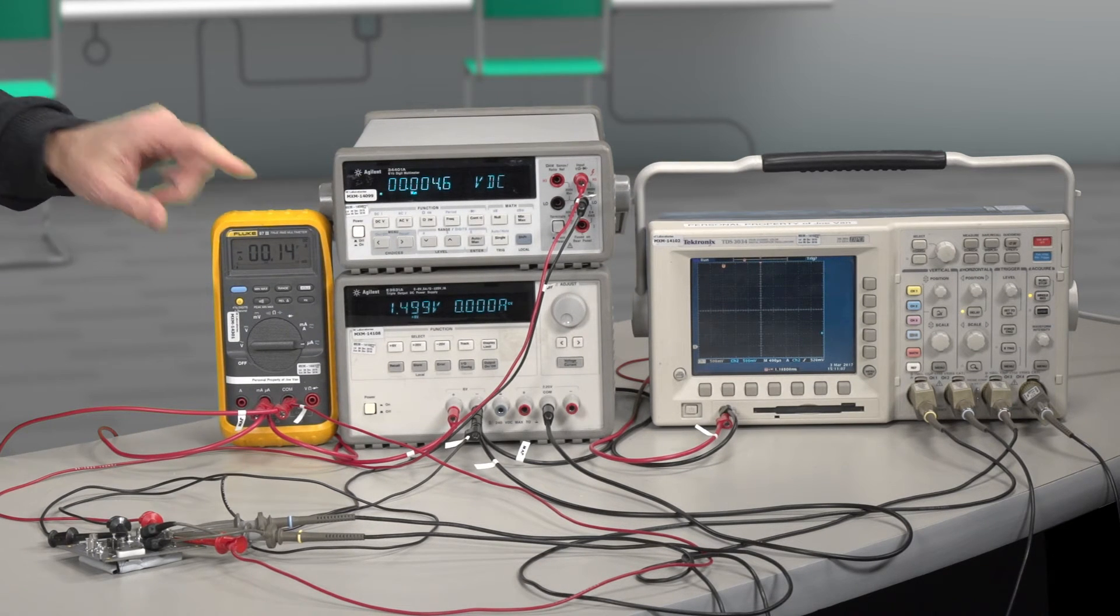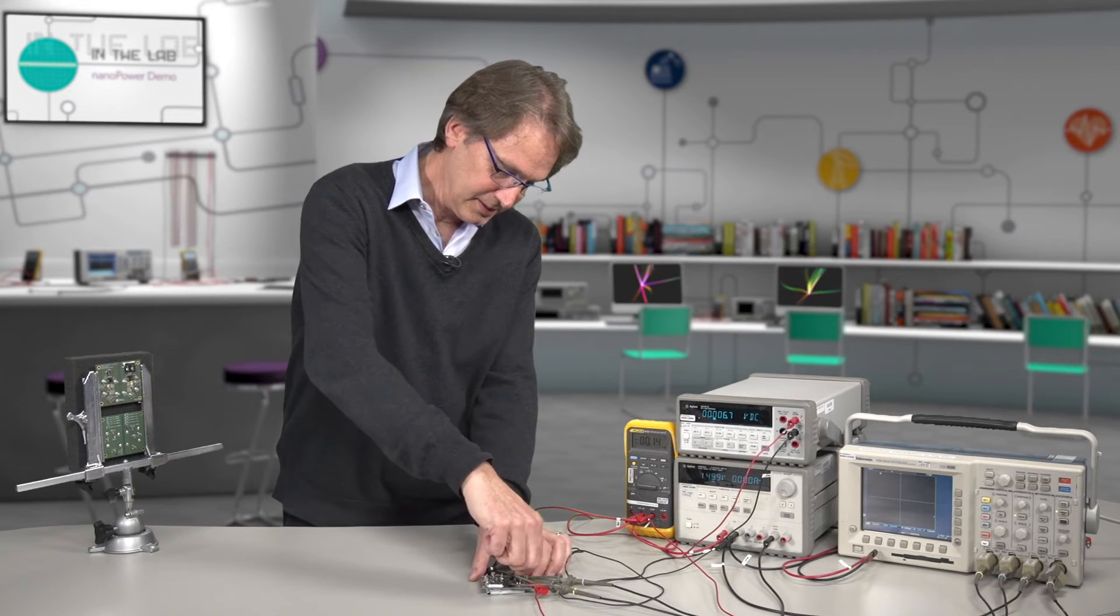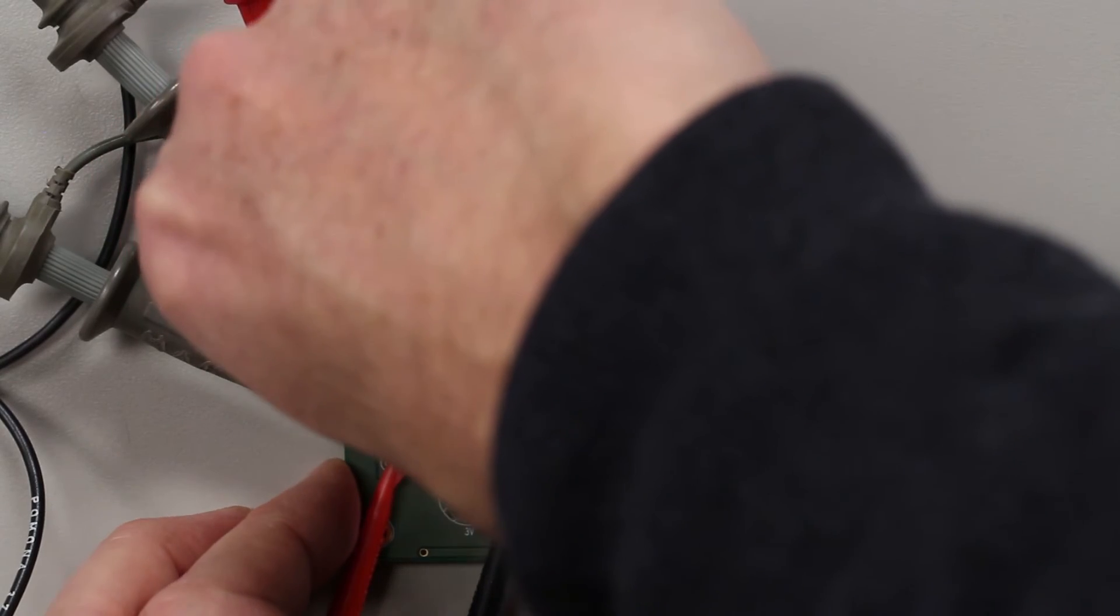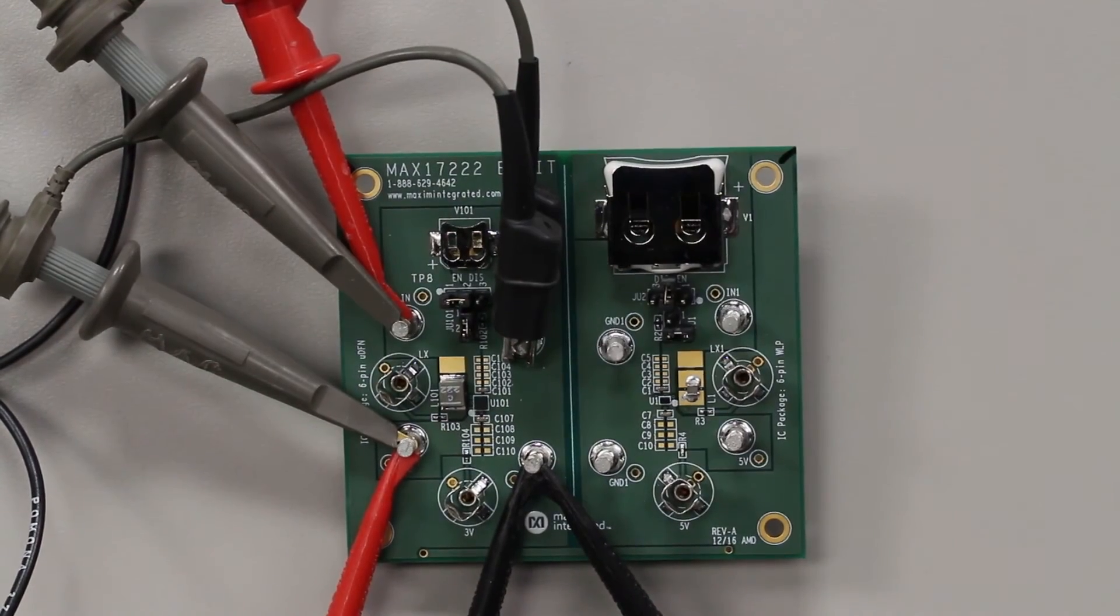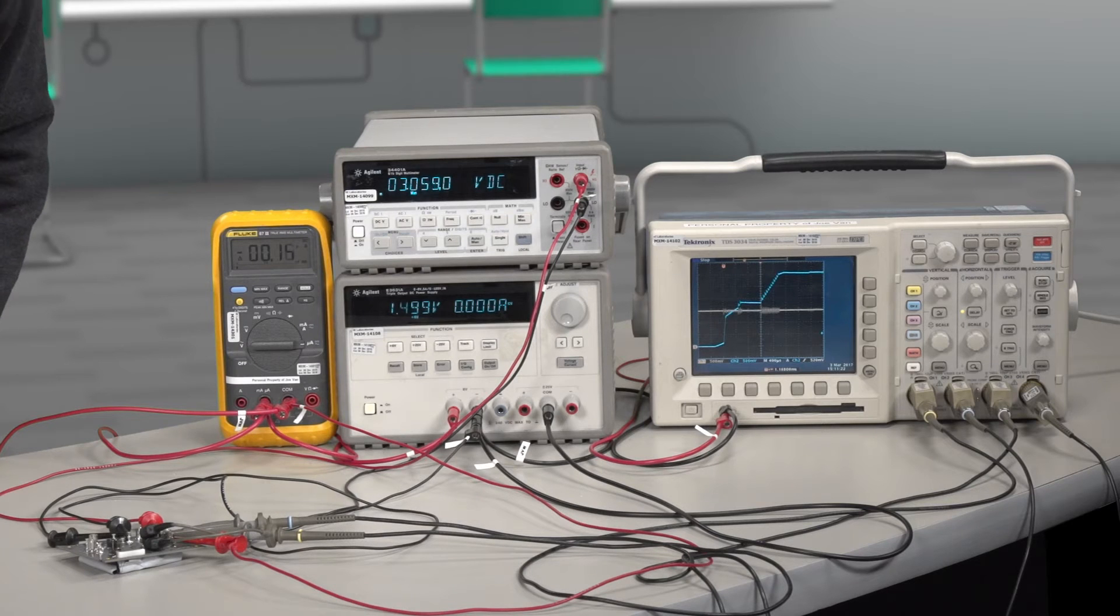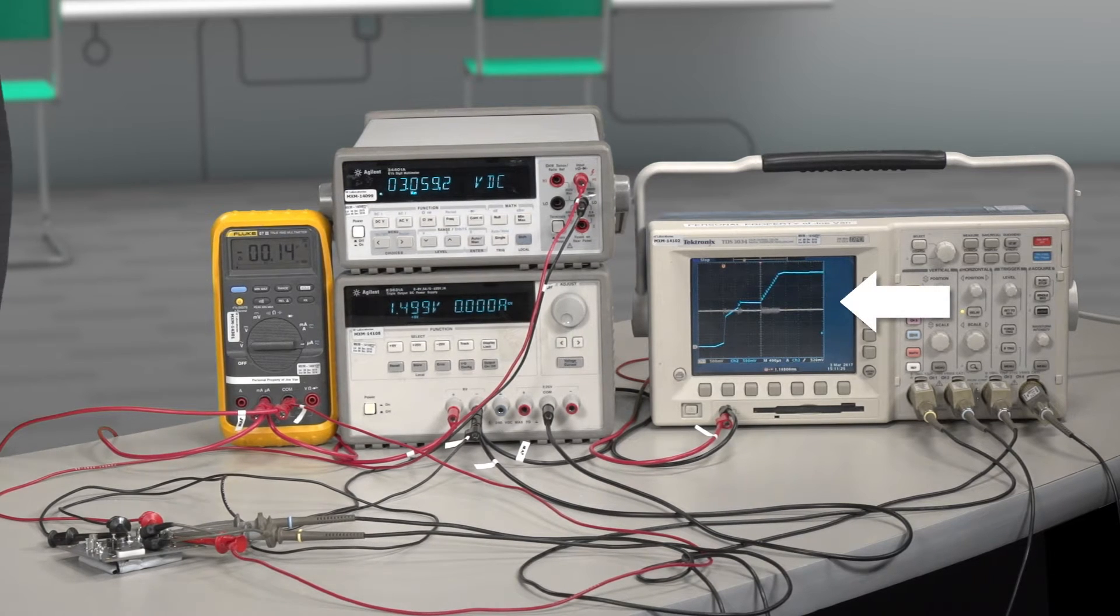We also have a meter here for current which we're going to look at a little bit later. So let's get this part started up. I'm going to take the enable input and disconnect it from ground and tie it to in. Now we see the output voltage has a nice rising waveform on it. That's the blue trace.